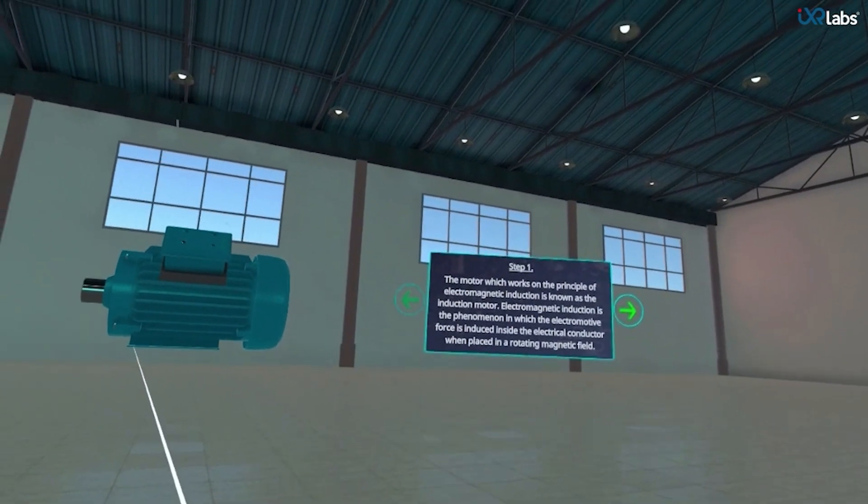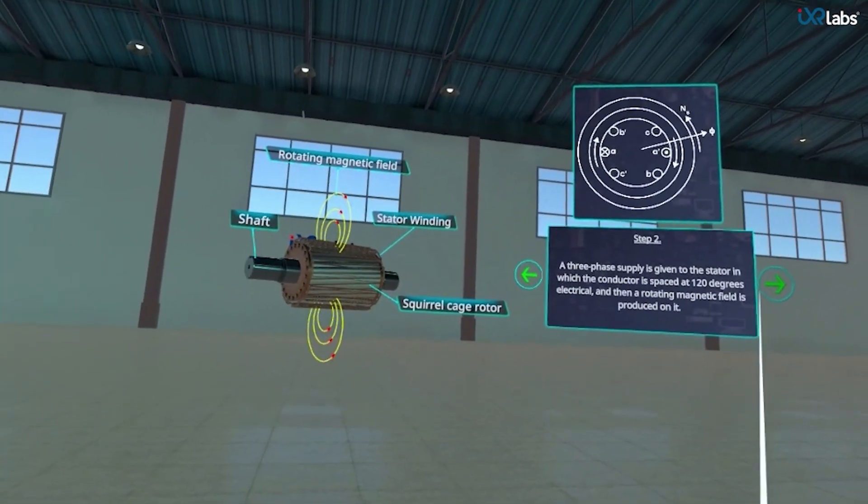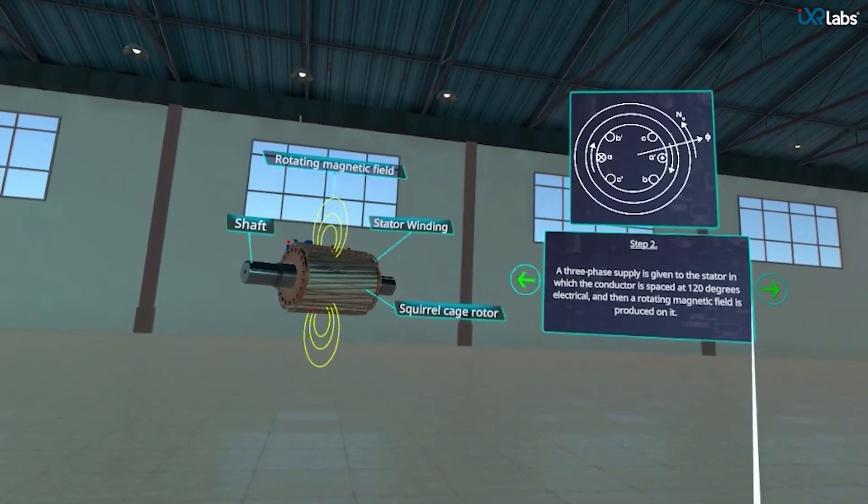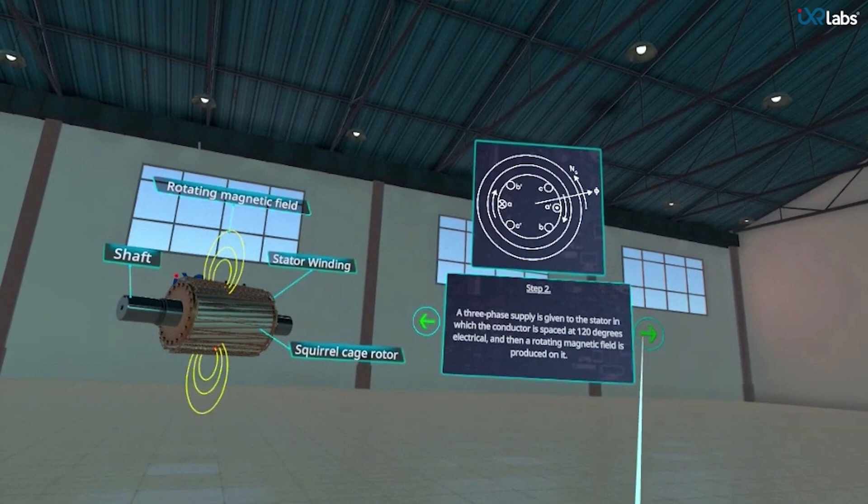Step 1 tells us about the principle on which the induction motor works, that is electromagnetic induction. In step 2, a three phase supply is given to the stator in which the conductor is spaced at 120 degrees and then a rotating magnetic field is produced on it.